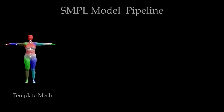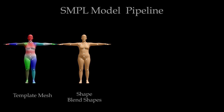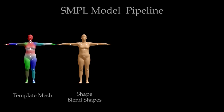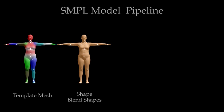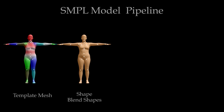SMPL contains a template mesh T in a neutral pose, and adds offsets to this template to represent new body shapes and pose-dependent shape changes. From training scans, we learn shape blend shapes that capture the variation in human shape. Adding different combinations of shape blend shapes produces different body shapes. SMPL predicts the joint positions for a given body shape as a function of the mesh vertices, shown as white dots.